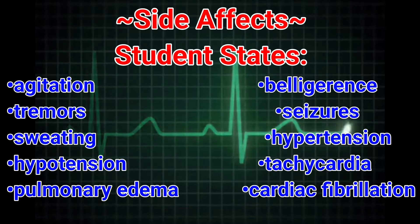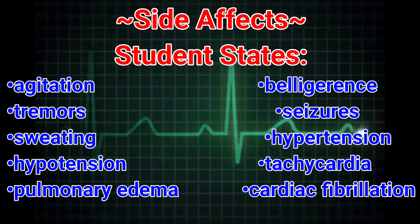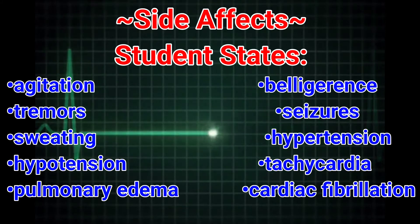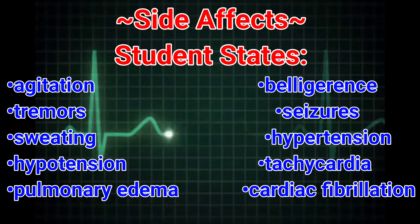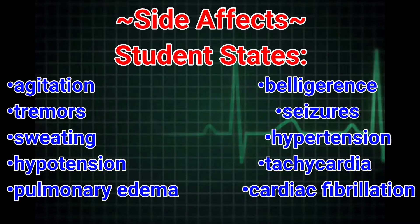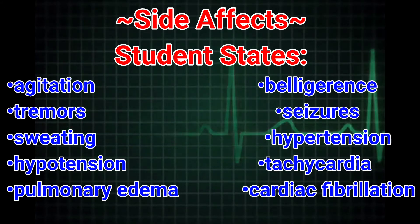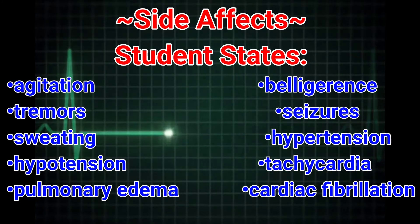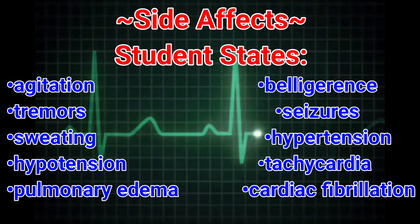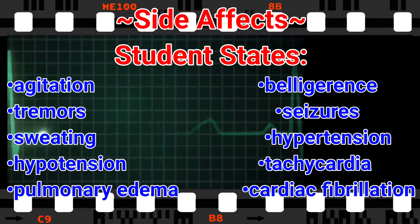Side effects. Student states: Side effects of naloxone include agitation, belligerence, tremors, seizures, sweating, hypertension, hypotension, tachycardia, pulmonary edema, and cardiac fibrillation.